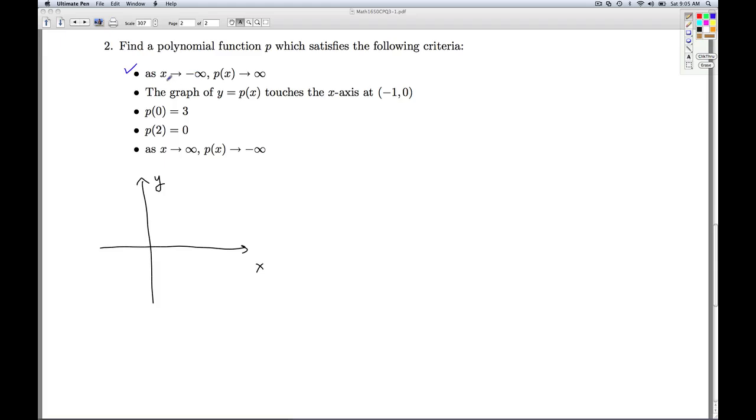This first statement is a statement about the end behavior. As x goes off to negative infinity, the P of x goes to infinity. So the P of x, remember, is the y values. So as x heads off over and over to the left, the y's are heading more and more up. So I'm going to start up here.